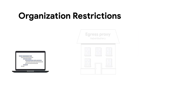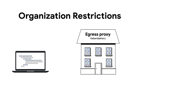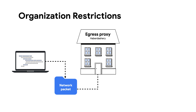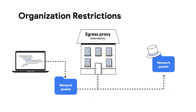To use Organization Restrictions, your employees must connect to Google Cloud through managed devices, such as company laptops, which are configured to send all of their internet traffic through an egress proxy managed by your security administrators. This egress proxy adds an Organization Restrictions header to any Google Cloud-bound requests originating from these managed devices, allowing security administrators to specify a list of authorized Google Cloud organizations and preventing users from accessing any Google Cloud resources in non-authorized organizations.